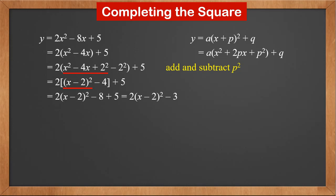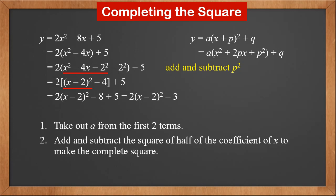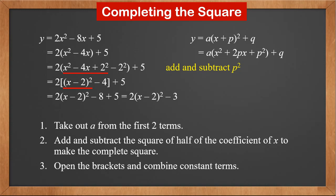The general steps to complete the square are: first, take out a from the first two terms; second, add and subtract the square of half of the coefficient of x to make the complete square; third, open the brackets and combine constant terms.